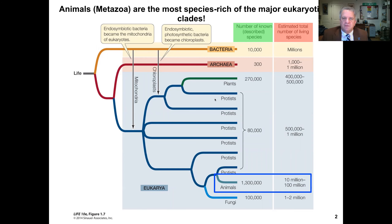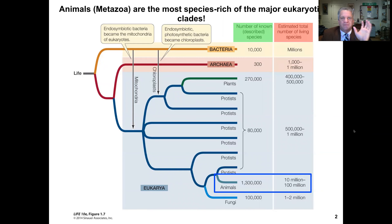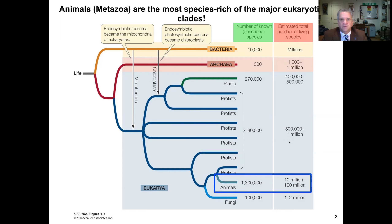Looking at the great tree of life, we have the bacteria and the archaea, which are paraphyletic relative to eukaryotes. What's important here is that animals, or the metazoa, are by far the most species-rich clade of the major eukaryotic lineages. Plants have about 400–500,000 species; all unicellular eukaryotic lineages total about 500,000 to 1 million; fungi about 1–2 million; and animals somewhere between 10 to 100 million species.